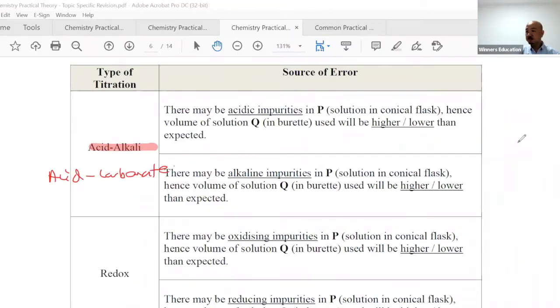If your titration results - the one in the burette - you get a volume of solution Q, the burette reading will be higher or lower than expected if there are acidic impurities in P, the one in the conical flask.